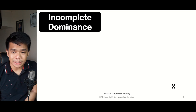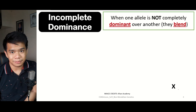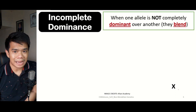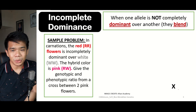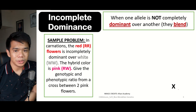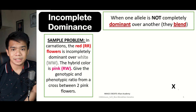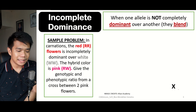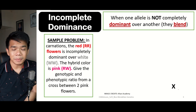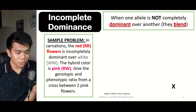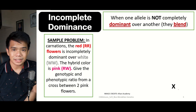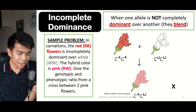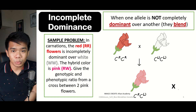In incomplete dominance, we have two weak dominant traits, and what happens is that they tend to blend. This is present in plants. For example, in carnations, both the red and white flowers are incompletely dominant with one another. The red is represented by capital RR and the white by capital WW. The hybrid color is pink, represented by RW — meaning pink is the combination of the two weak dominant traits.